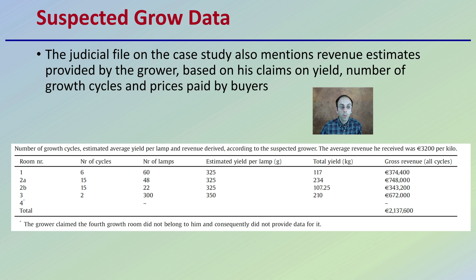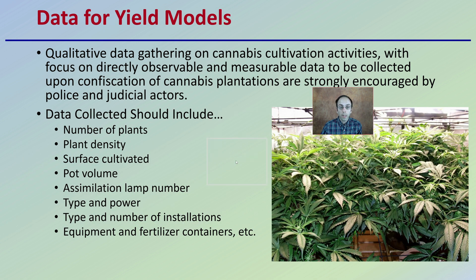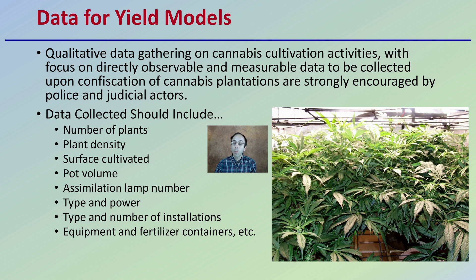What's the total yield? What's the number of plants? What are the buyers willing to pay for it? This is what causes that source of potential confusion. If you're looking at what information we can glean and what data should we be collecting — if the courts are collecting it, it's probably a good idea for us to also be collecting it as qualitative data on cannabis cultivation activities. Focus on directly observable and measurable data upon confiscation of cannabis plantations, as strongly encouraged by police and judicial actors.